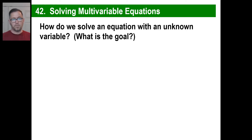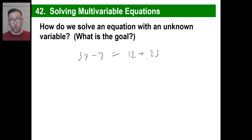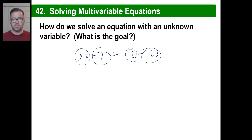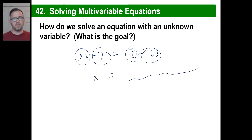The point is, let's look at this. How do we solve an equation with an unknown variable? What's the goal? For example, 3x minus 7 equals 12x plus 23. The goal is to get all those x's over here and all the numbers over here. Finally, you're going to get x completely by itself — positive 1x equals whatever else is over here. That's the goal: get the x totally by itself, everything else on the other side of the equation.